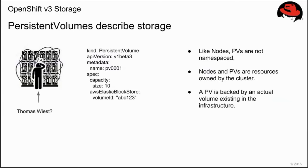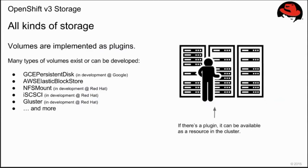Persistent volumes are resources like nodes. They are created by an administrator, they are owned by the cluster, and they are not namespaced. The persistent volume is backed by an actual volume in the underlying infrastructure, and they are created using the API like other resources. Volumes are implemented as plug-ins, and many plug-ins exist with more in development. Red Hat is currently working on plug-ins for NFS, iSCSI, Lustre, GlusterFS, and many others. Volume plug-ins are natural extension points — if we can develop a plug-in for something, we can mount that volume in OpenShift.